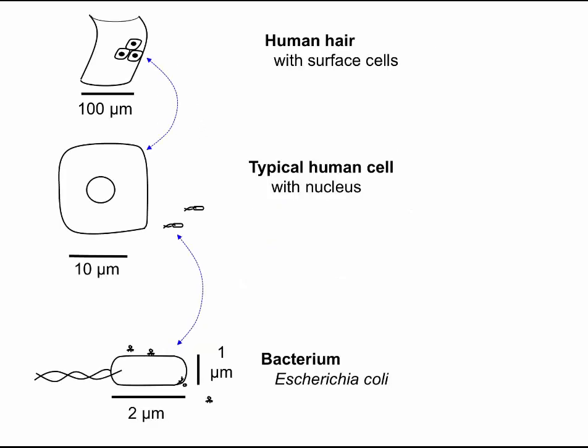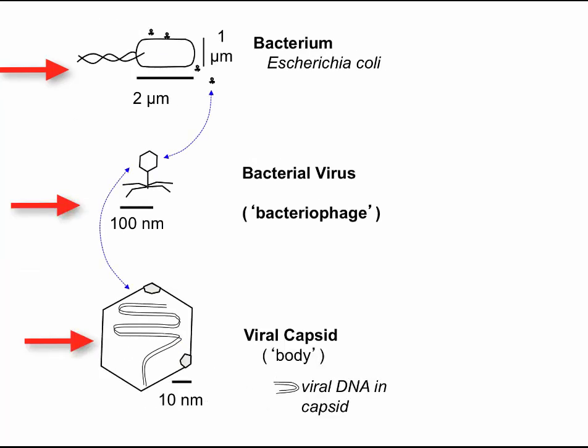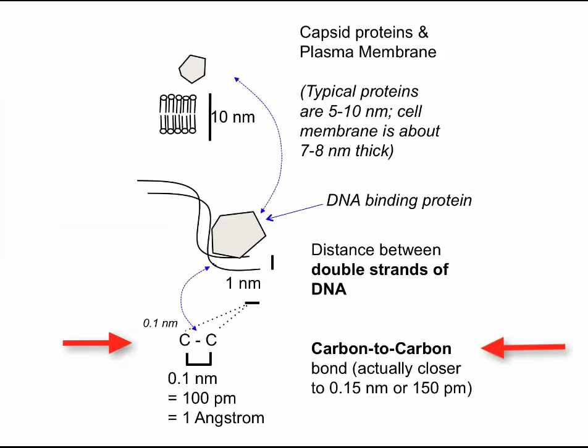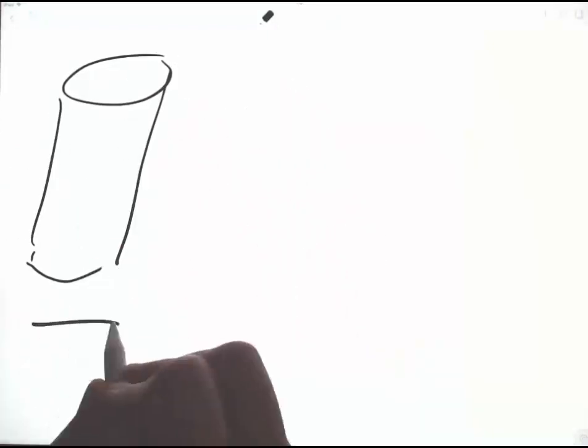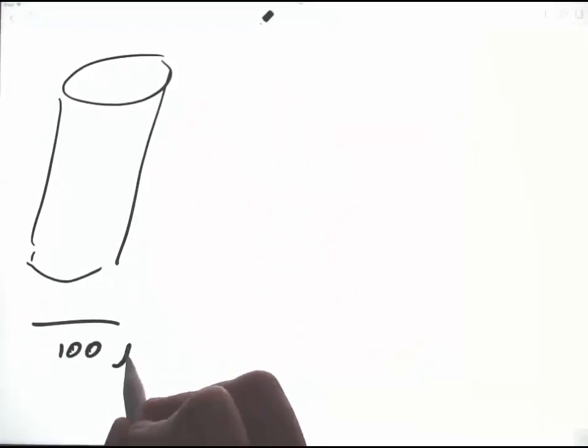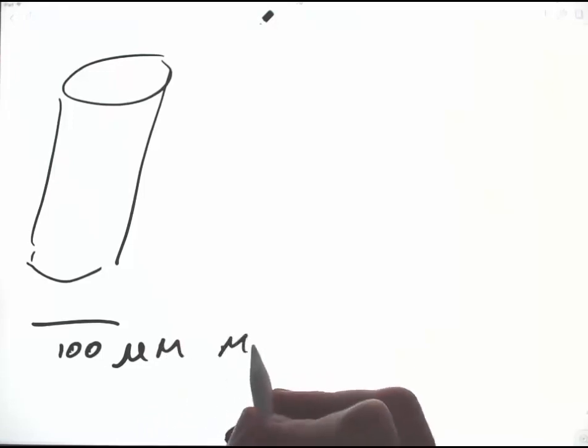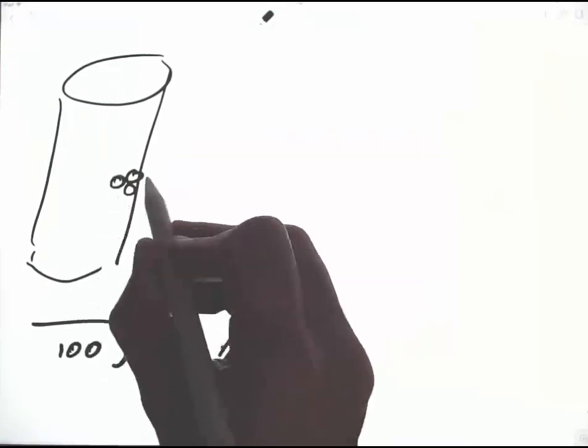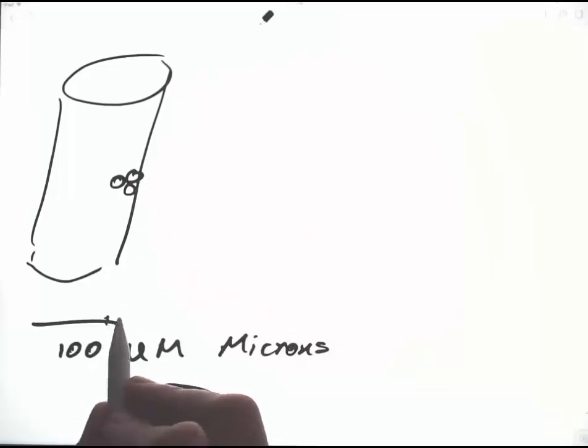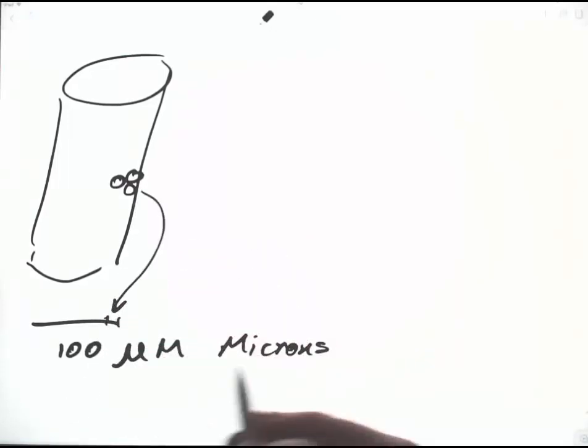The bacterial ruler starts with a hair, and in powers of 10, drops down in size all the way to a carbon-carbon bond. We start with a human hair, and a human hair is about 100 microns. The human hair is made of cells, dead cells, each about one-tenth of the diameter of the hair, or 10 microns.